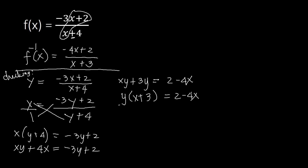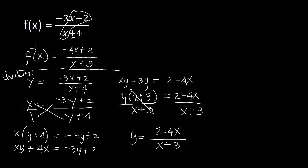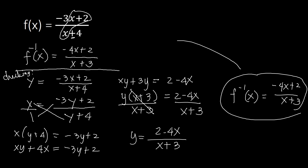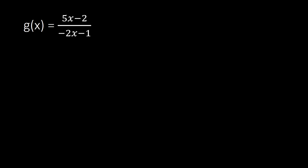Dividing both sides by (x plus 3), we get y equals 2 minus 4x over x plus 3. Arranging that, the final answer for the inverse is negative 4x plus 2 over x plus 3 — the same value obtained from the shortcut. This confirms the shortcut works.